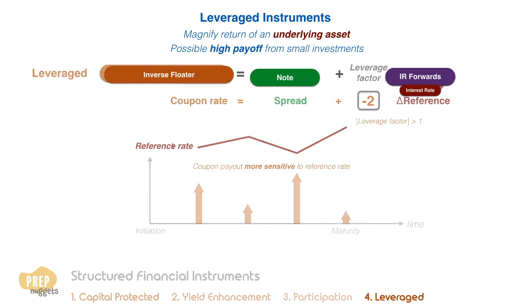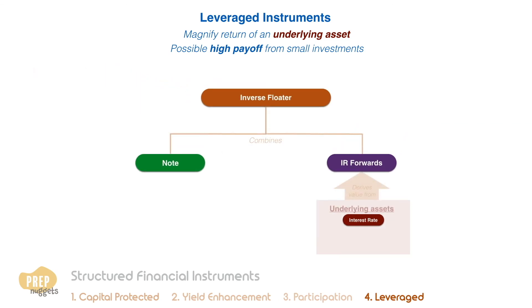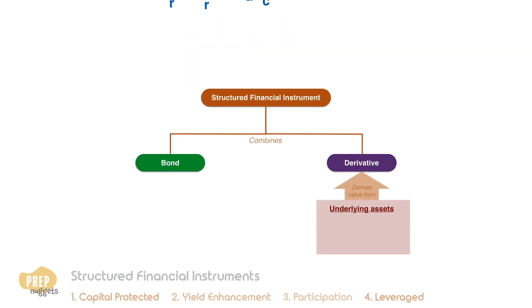That concludes this lesson, where we are introduced to four classes of structured financial instruments other than asset-backed securities. Regardless of the classification, the payouts from a structured financial instrument can usually be decomposed to a combination of a bond and derivatives.